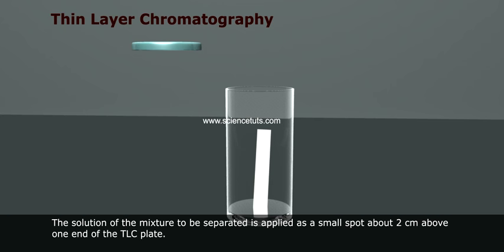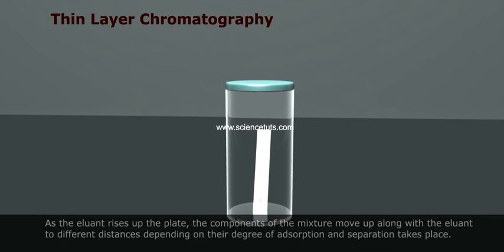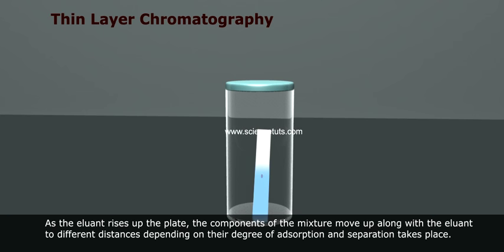The solution of the mixture to be separated is applied as a small spot about 2 cm above one end of the TLC plate. The glass plate is then placed in a closed jar containing eluant. As the eluant rises up the plate, the components of the mixture move up along with the eluant to different distances depending on the degree of adsorption and separation takes place.